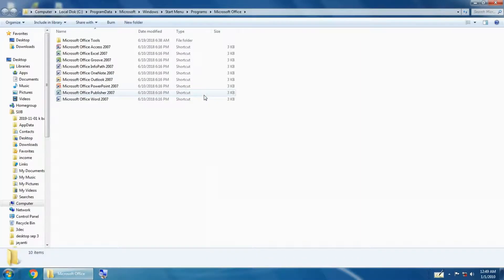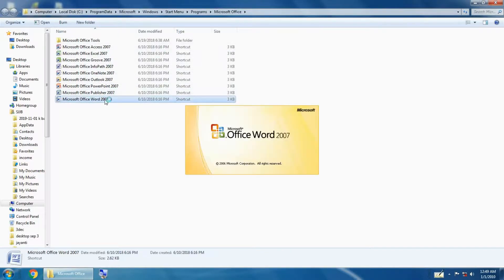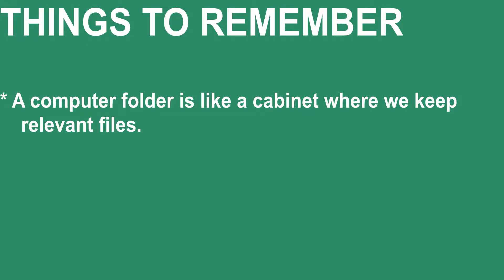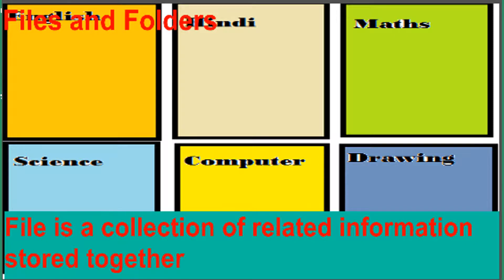Step 4 — now we can double-click on the shortcut icon to open the application directly. Now let us quickly summarize what we have learned in this video. First, we learned about files and folders. A file is a collection of related information stored together.